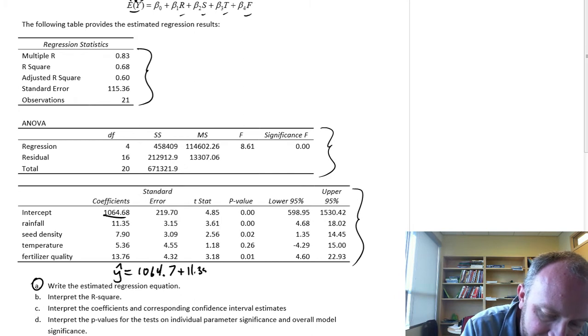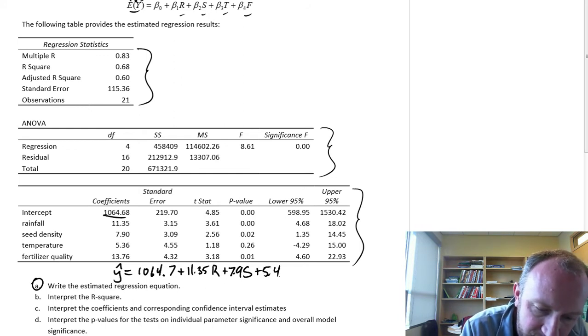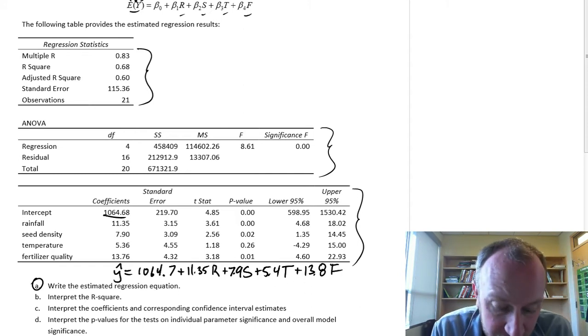plus 7.9 on seed density, plus 5.4 on temperature, plus 13.8 on fertilizer. So there's our estimated regression equation.